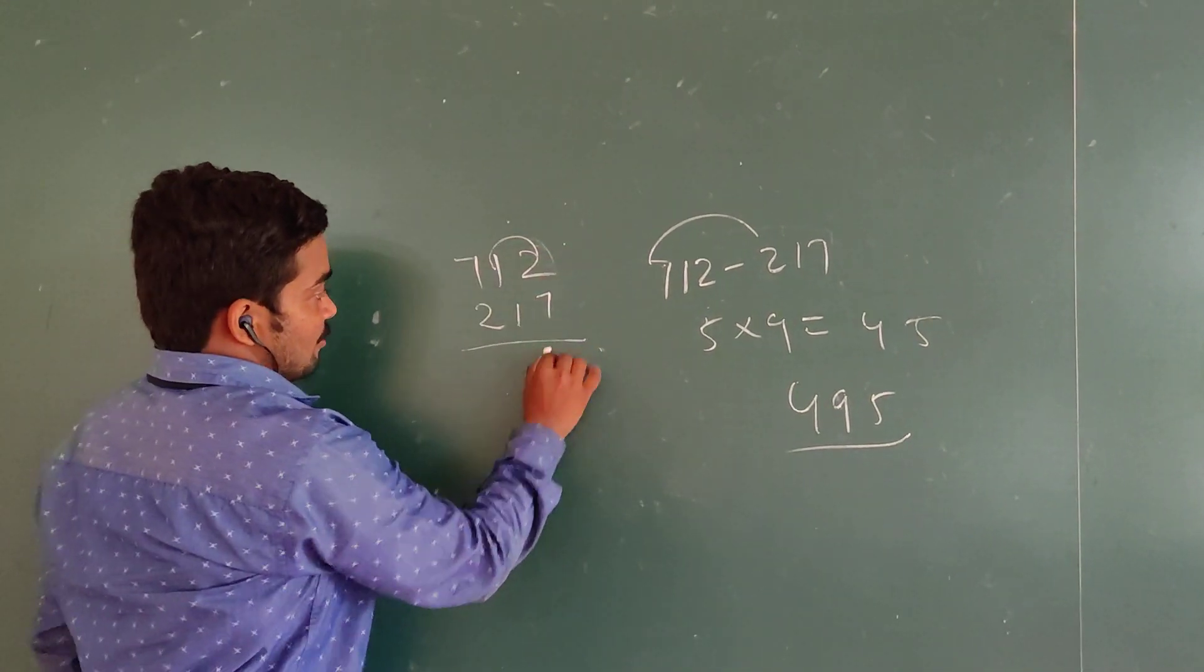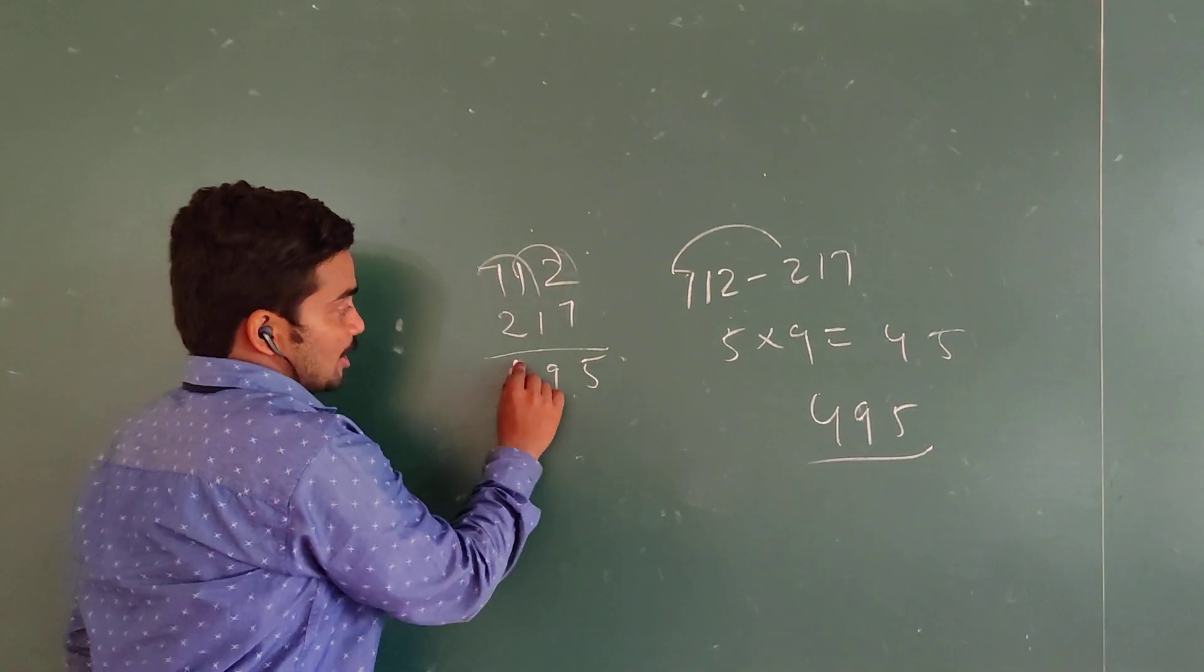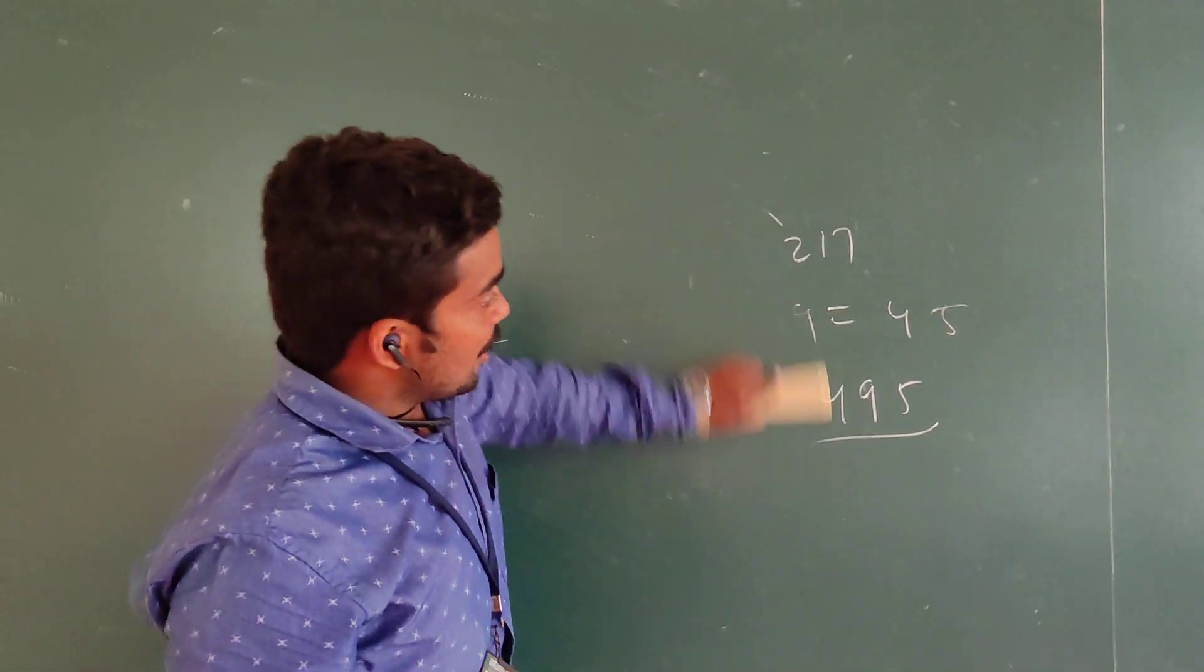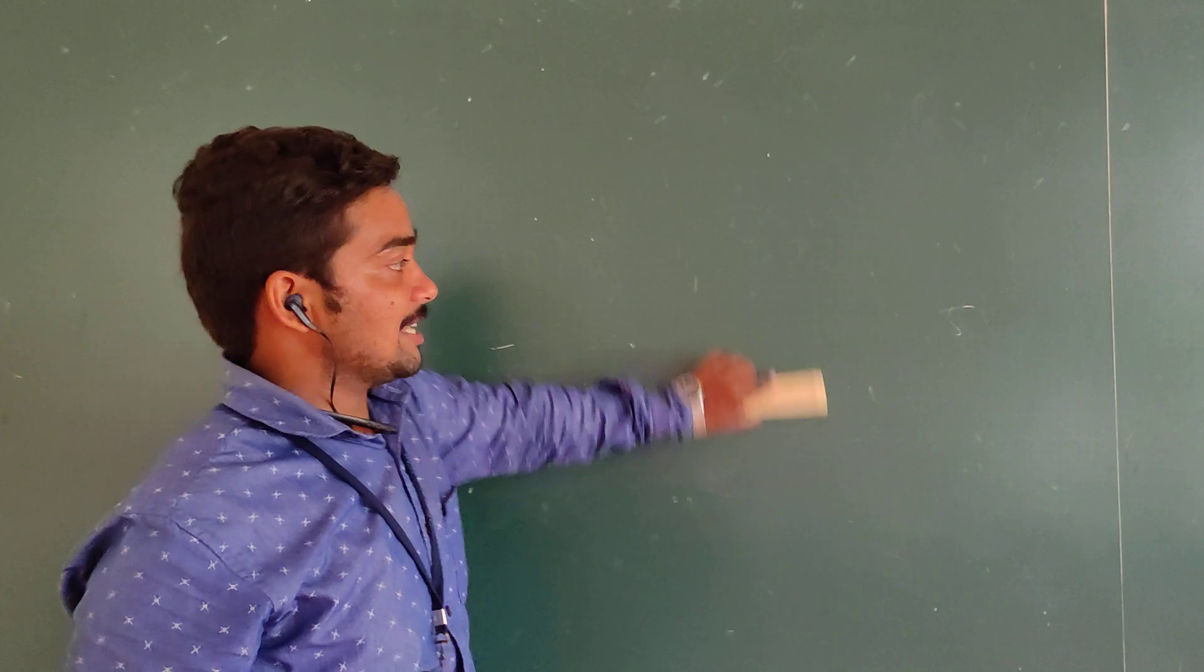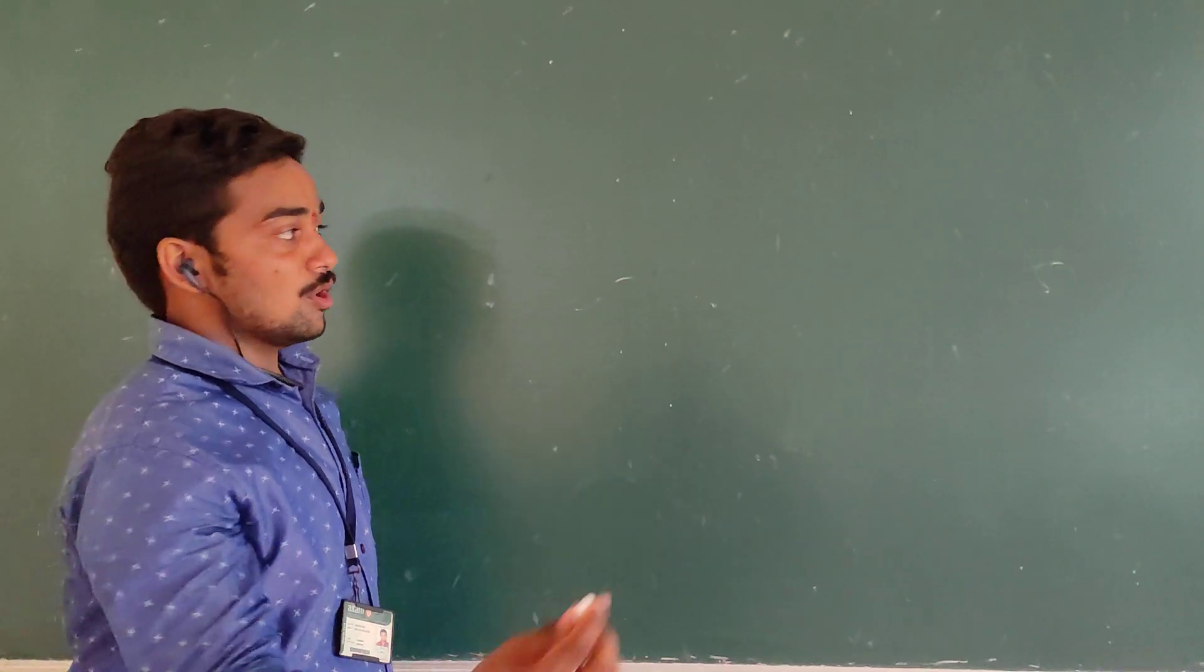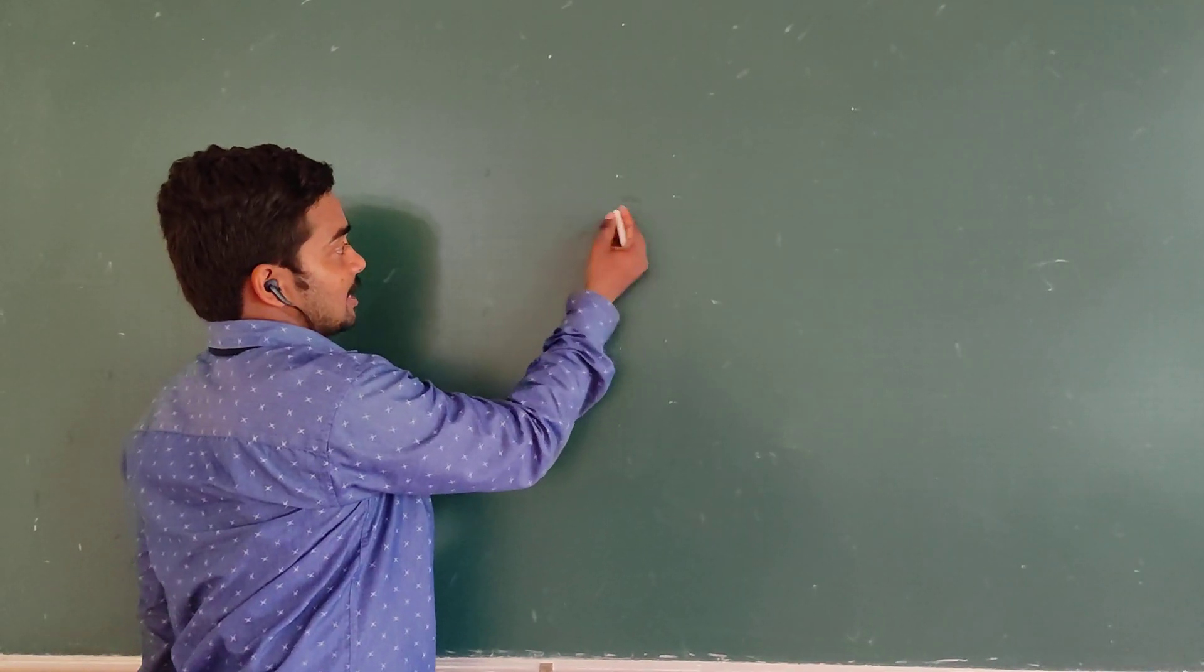Let's verify. 495 is our answer. So the method is: subtract the first digits, multiply by 9, and you get the answer. Let me take another example.